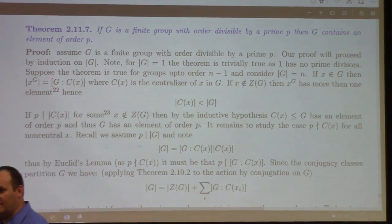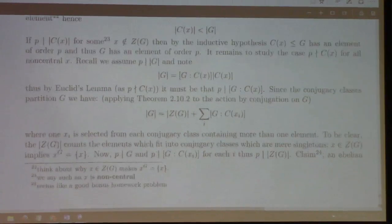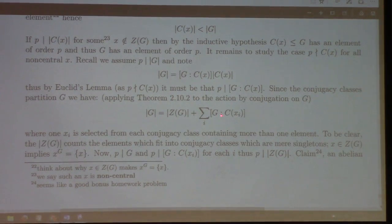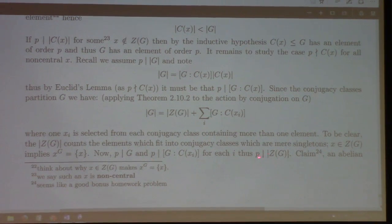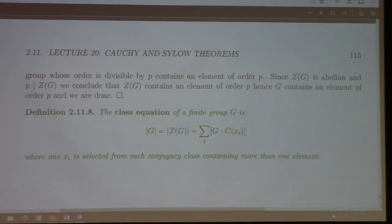The center of the group is an abelian group. So if P divides the order of the center, by your homework problem, the center has an element of order P. But the center is a subgroup of G. Consequently, G has an element of order P. So there you have it — this is Cauchy's theorem: a finite group which has order divisible by a prime P must have an element of order P.